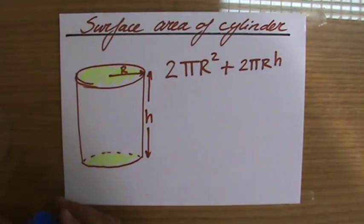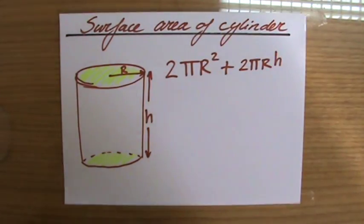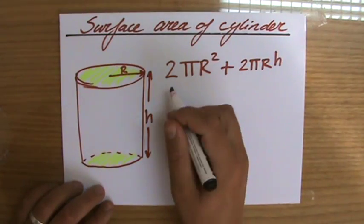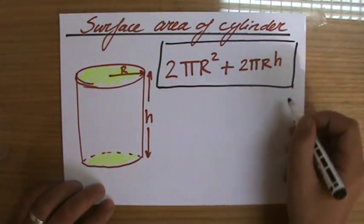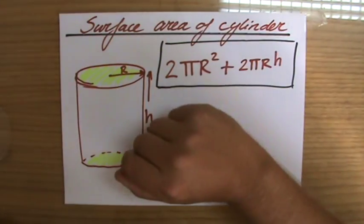I hope that was useful. You're going to use this in several situations, so make sure that you understand 2 times pi r squared plus 2 pi r h. Well done.